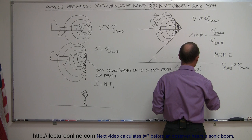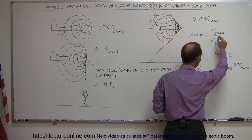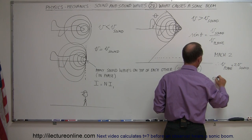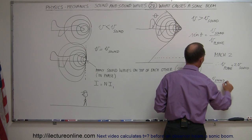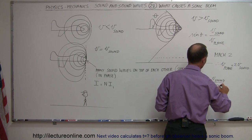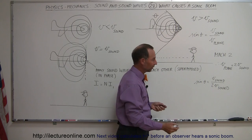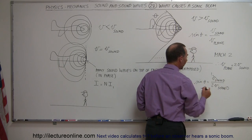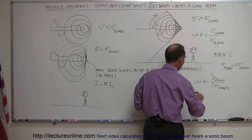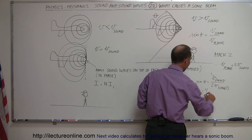That would be the sine of theta is equal to the velocity of the sound, which is v sound, divided by the velocity of the plane, which is twice the velocity of the sound, like that. Of course, the velocity of the sound cancels out, and you end up with one-half. So that means theta equals the arc sine of one-half.